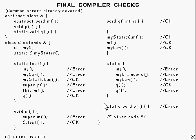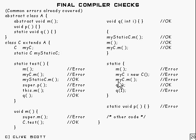Static — what have we got here? A straightforward call to M — well, that's going to be an error, because you're in a static context and trying to call this instance method. myC equals something or other — no, you haven't got any access to myC, because that's an instance variable. myC.M — again, it's an instance variable, you can't use it like that. At least you can't use it like that; you can go through some other static route.